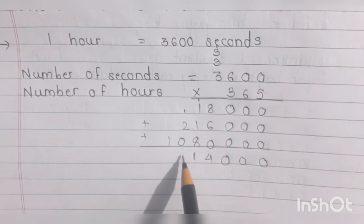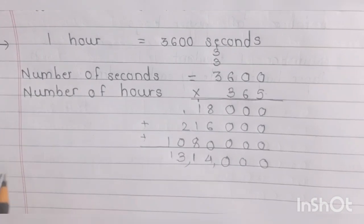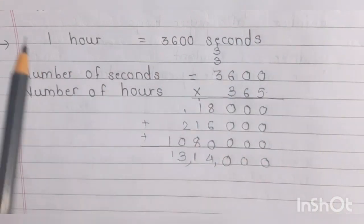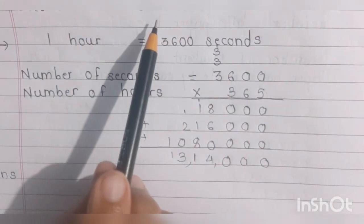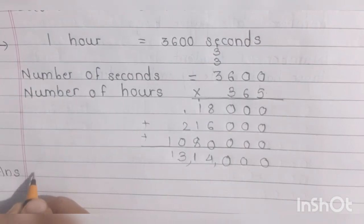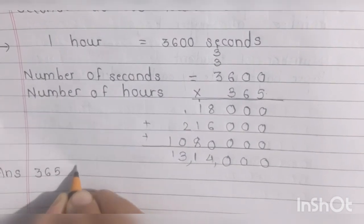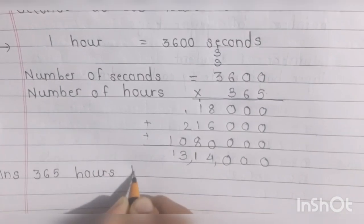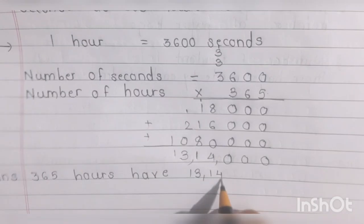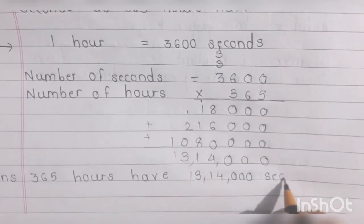1, 2+1=3, 3, 1. Here we got our final answer. How many seconds do 365 hours have? Three hundred and sixty-five hours have thirteen lakh fourteen thousand seconds.